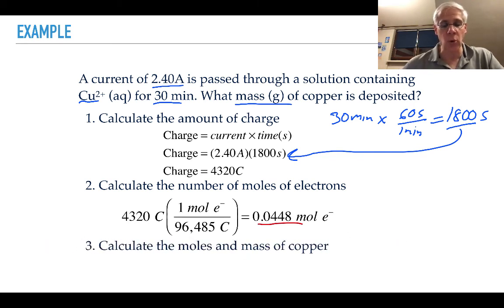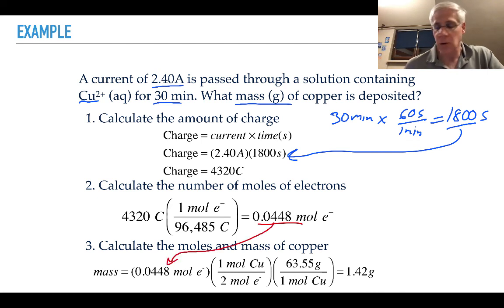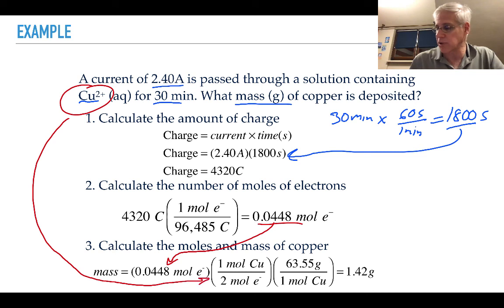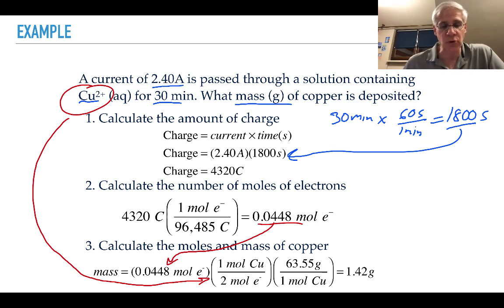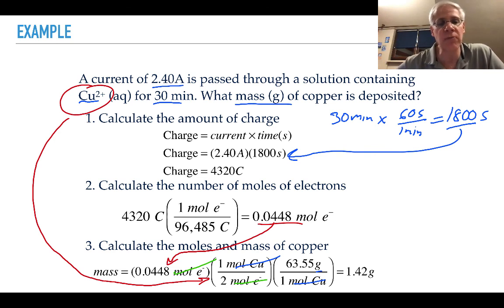From here, we calculate moles of copper and then mass of copper in one step. We take 0.0448 moles of electrons and multiply by 1 mole of copper per 2 moles of electrons — the factor of 2 comes from the 2+ charge on copper. Moles of electrons cancel, leaving moles of copper. We then convert to grams using copper's molar mass from the periodic table. The result is 1.42 grams — so passing 2.4 amps for 30 minutes deposits 1.42 grams of copper.